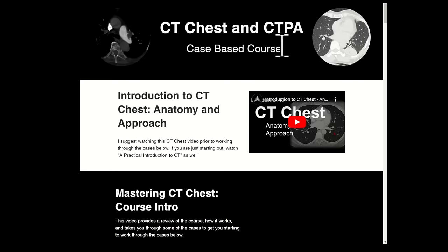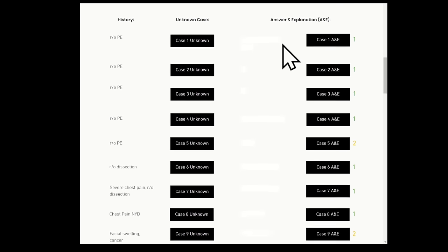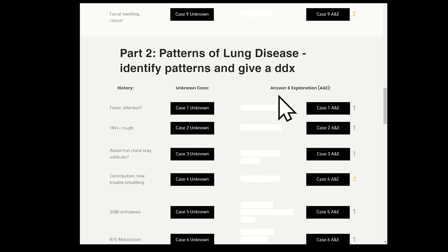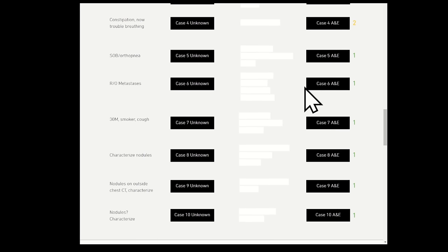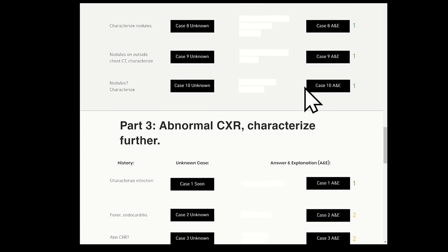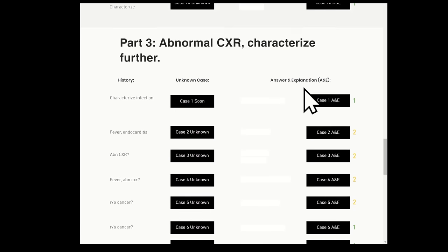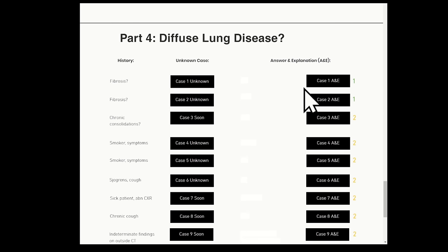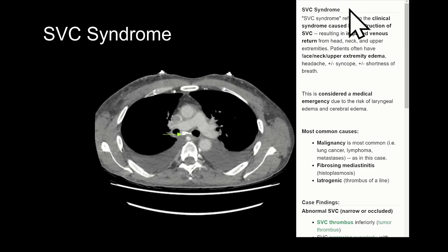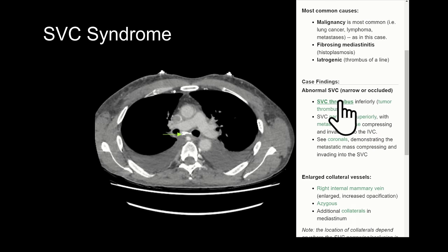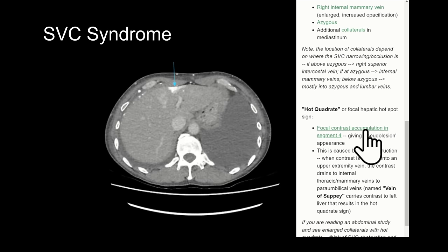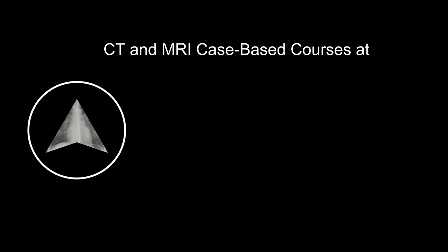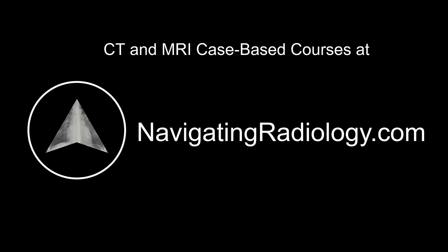Our CT chest case-based course includes over 30 full DICOM cases covering acute vascular emergencies, all patterns of lung disease, important infections and complications, and diffuse lung diseases like ILDs. Each case comes with walkthroughs of imaging findings to help you become a better radiologist. This course along with our other CT and MRI case-based courses can be accessed at navigatingradiology.com.